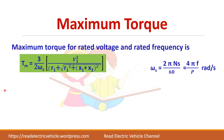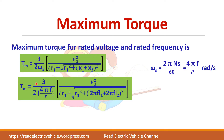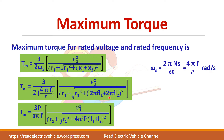Substituting ωs = 2πNs/60, where Ns = 120F/P, gives ωs = 4πF/P. Also writing X1 as 2πF × L. Collecting constants gives 3P/8π, which we call small k. We then simplify to bring the V by F ratio into the equation so we can relate V/F to the maximum torque.